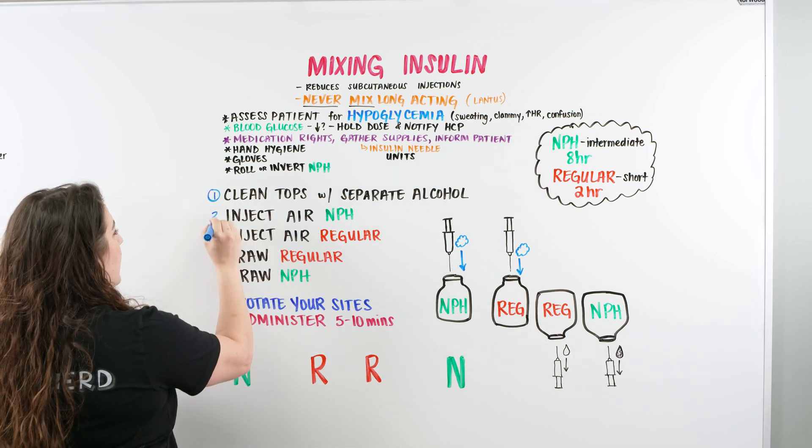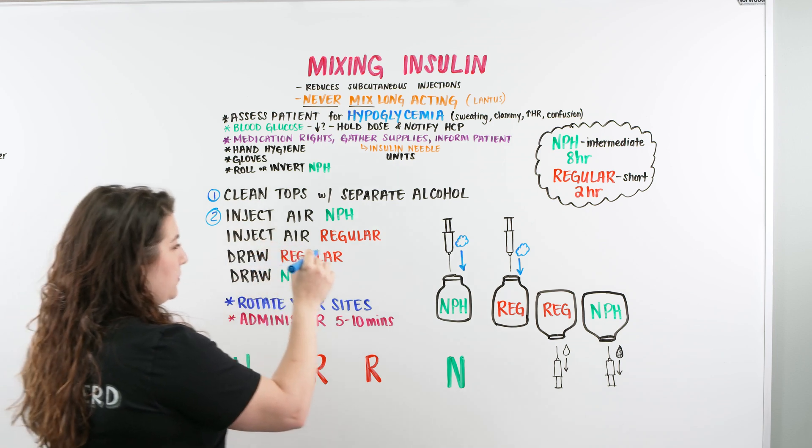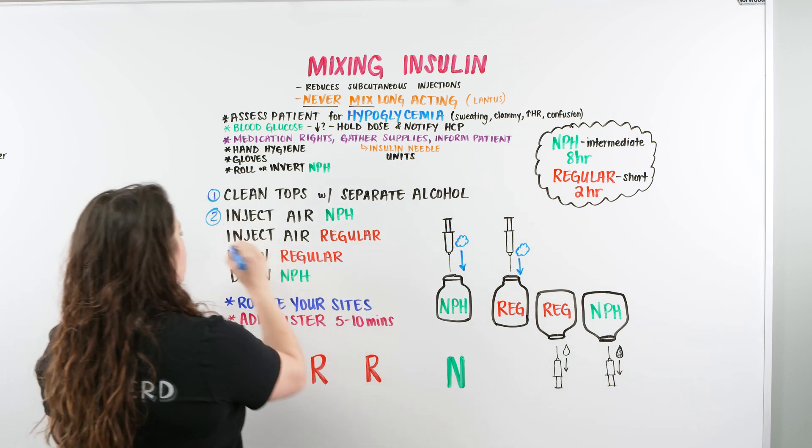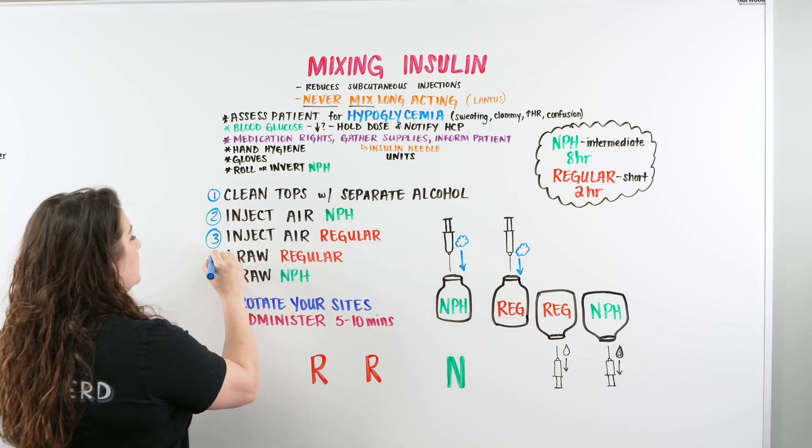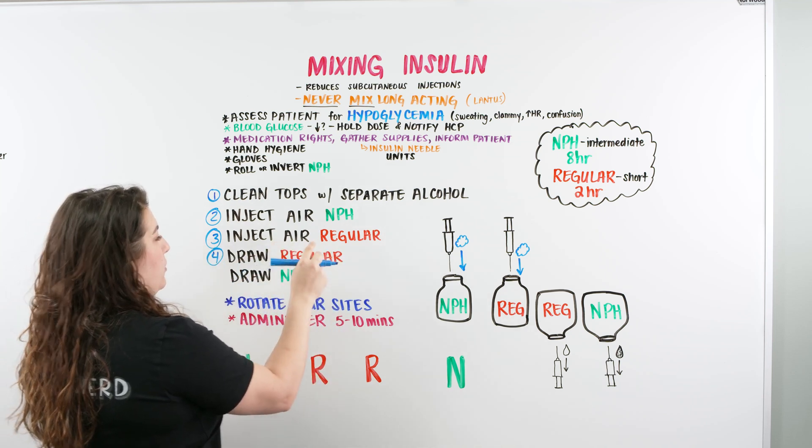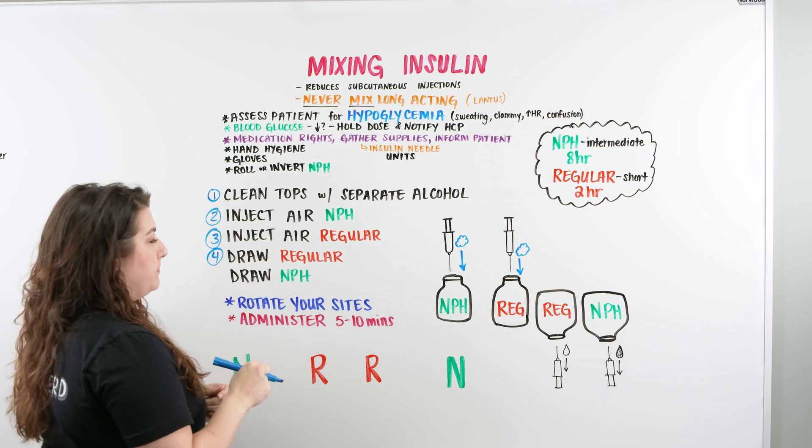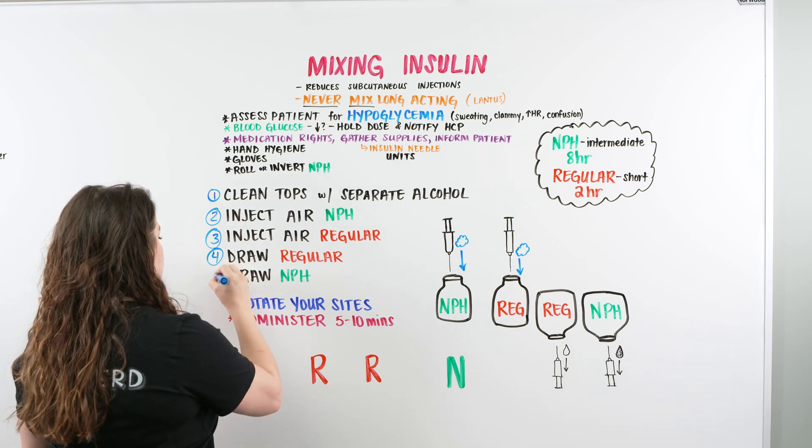You then want to inject air into the NPH. Then you want to inject air into the regular. Once the syringe is already in the regular, you're then going to draw the regular up and draw the NPH.